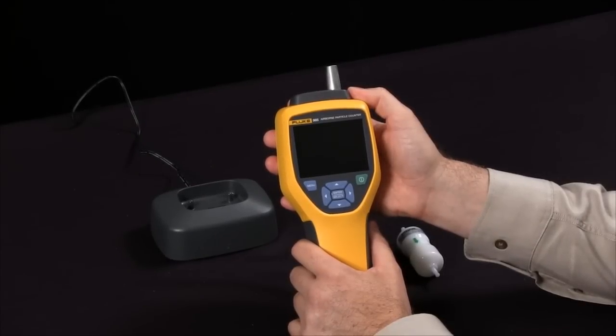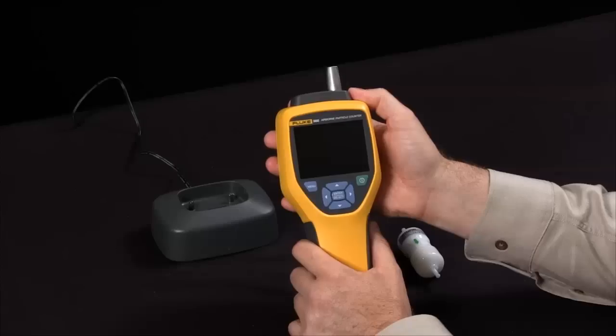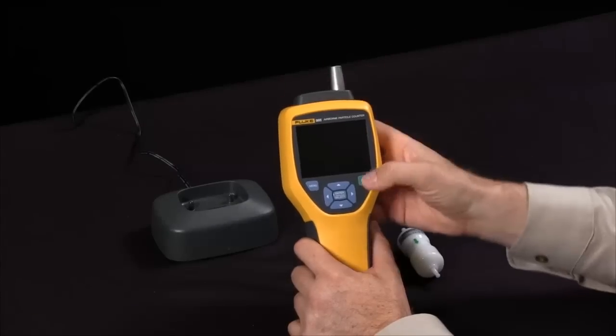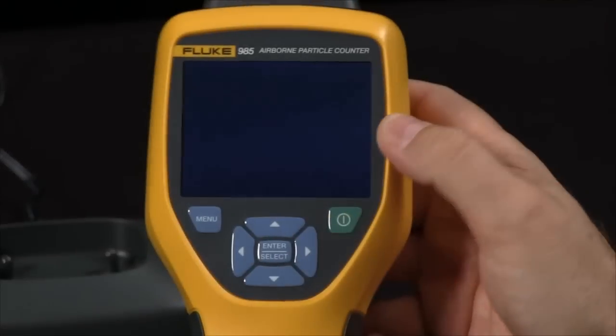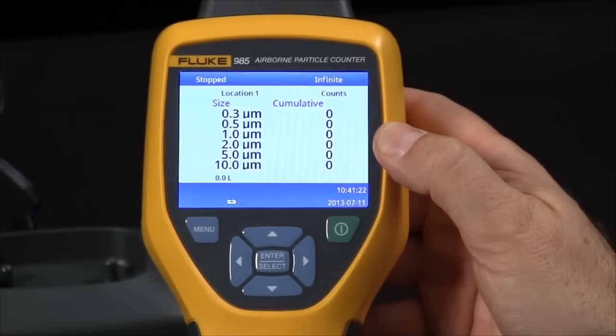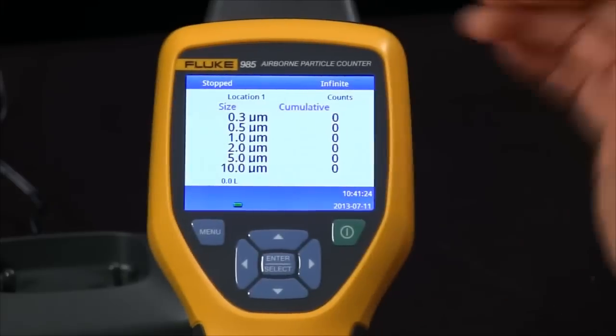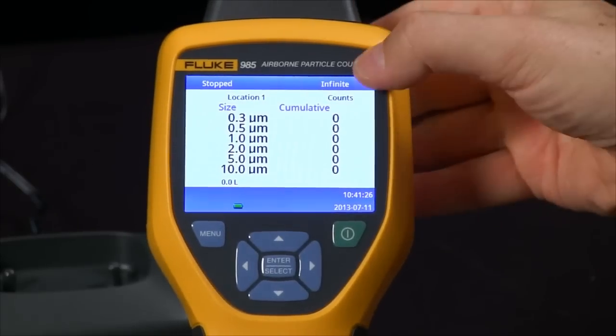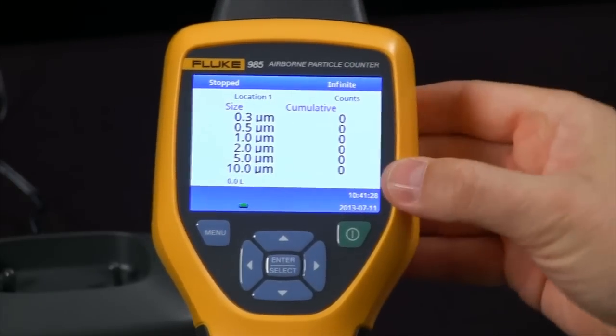How do I take measurements with the Fluke 985 airborne particle counter? Simply power on the device and your home screen will show you that we are sampling particulates in six different sizes, everything from 0.3 micron up to 10 micron.